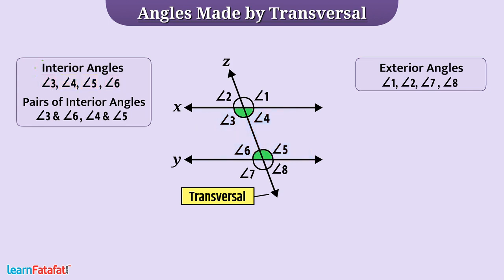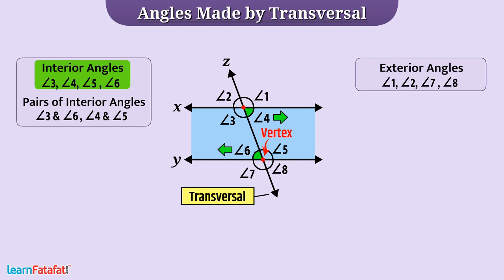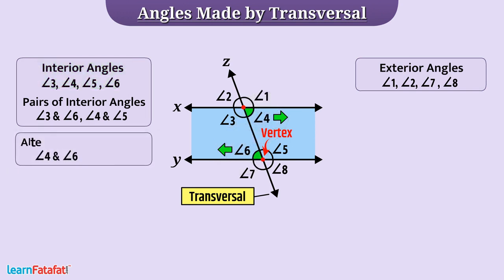Among the interior angles, angle 4 and angle 6 have different vertices. Both are present on the inner side of the transversal and they are on opposite sides of the transversal. Such angles are called alternate interior angles. Try to identify the other pair of alternate interior angles.